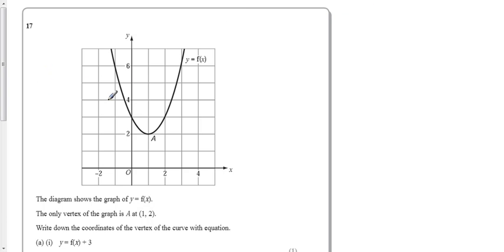Okay, question 17. We've got a graph here, which is y equals f of x. It's got the vertex here. Let's put a blob here. That's A. And A has got the coordinates (1, 2).